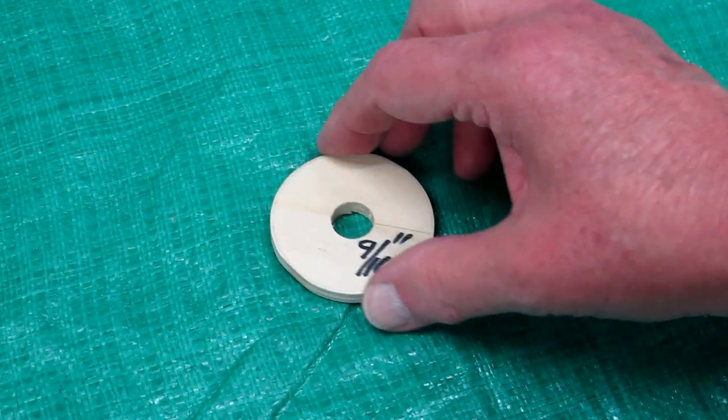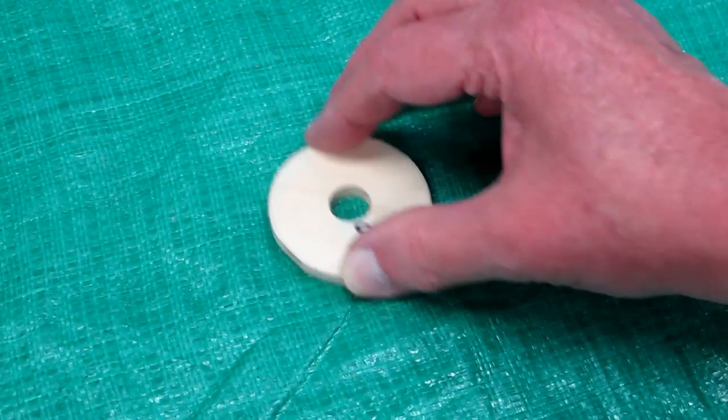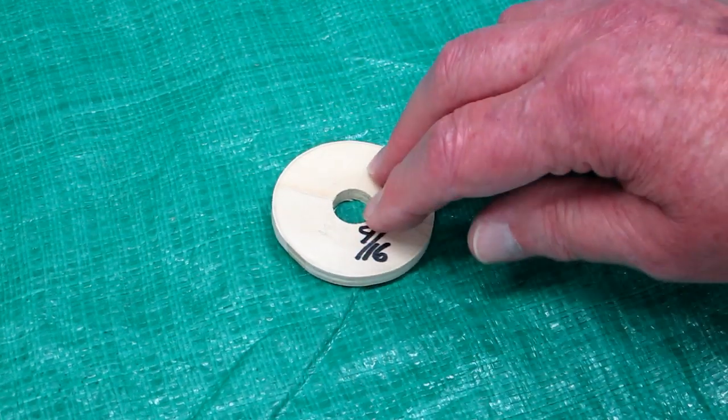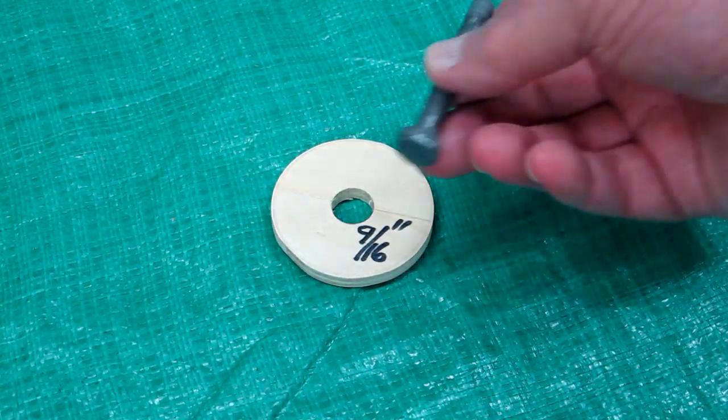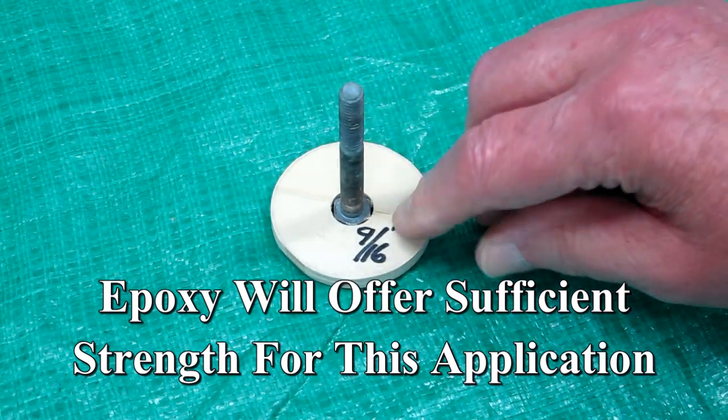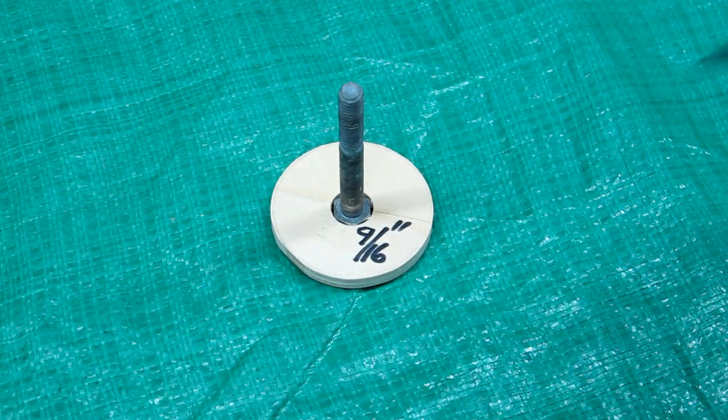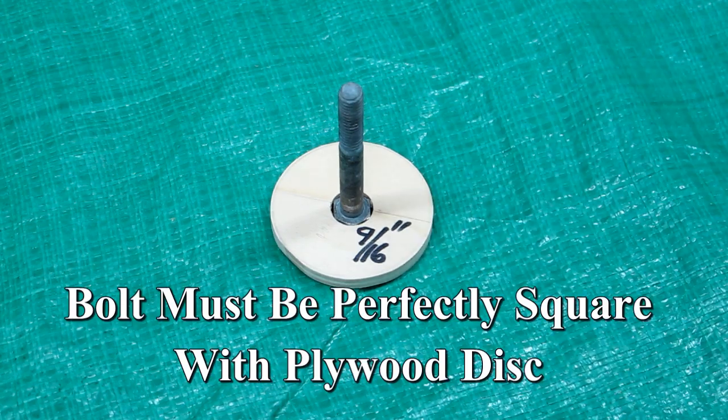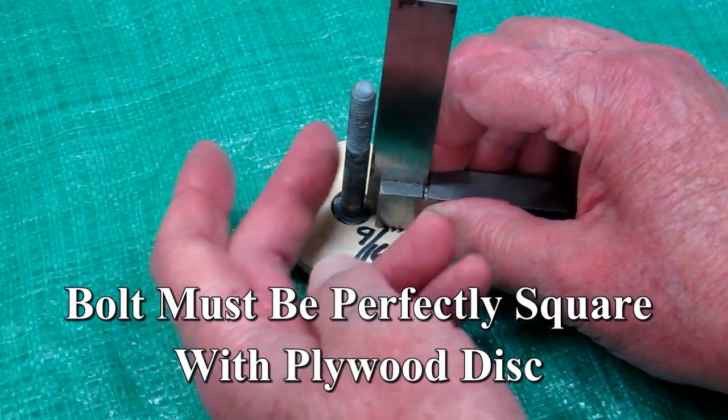Mix up some epoxy, put this on a piece of plastic or something flat, put epoxy around the inside, put epoxy around that bolt head, and shove that down in there, and make sure that this is below the surface and you want to square that.